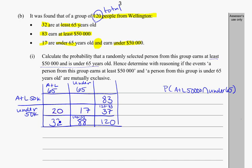Working upwards, I know that for those at least 65, there's a total of 32. If 20 of them earn under $50,000, then 12 of them must earn at least $50,000. For those under 65, there are 88 in total, and 17 are earning under $50,000, which means 71 of them must be earning at least $50,000. Now that I've got my table filled in, finding the probability shouldn't be too bad.